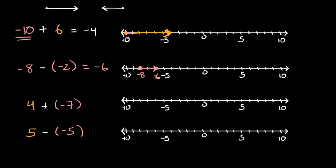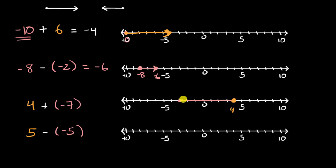We're starting at four in the third example, right over here at four, and we are adding negative seven. For negative seven, you're just going to move the absolute value of that to the left. The absolute value of negative seven is just seven, so you're going to move seven units to the left. We're not subtracting, so we just move seven units to the left — one, two, three, four, five, six, seven. We end up right over here. So we have positive four plus negative seven; we've gone seven units to the left. This is zero, negative one, negative two, negative three. So that is equal to negative three.